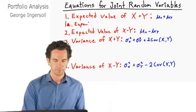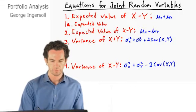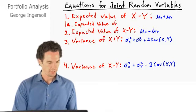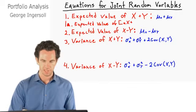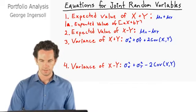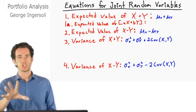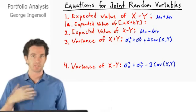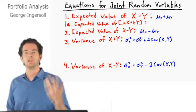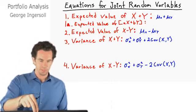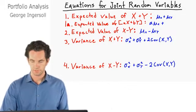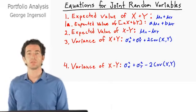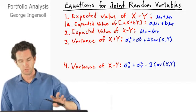The expected value of A shares of stock X — stock X being a random variable — and B shares of stock Y is going to be equal to A times the expected value of X plus B times the expected value of Y. In other words, we're just multiplying the shares for each of those random variables. Very straightforward so far.